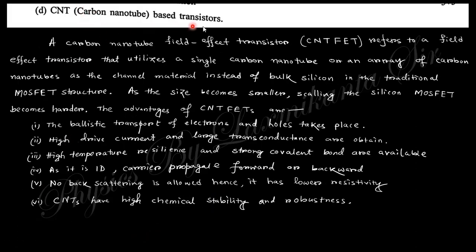Next is CNT carbon nanotube based transistor. CNT-based transistor refers to a field effect transistor using a single carbon nanotube. CNT gives you ballistic transport - ballistic transport means huge speed of electrons. This means a signal can transfer very easily and very fast.